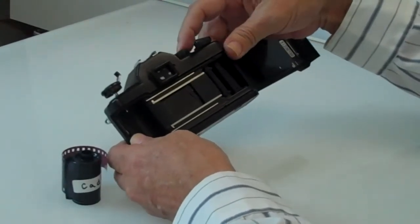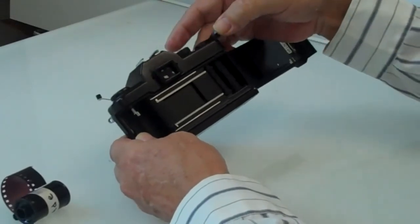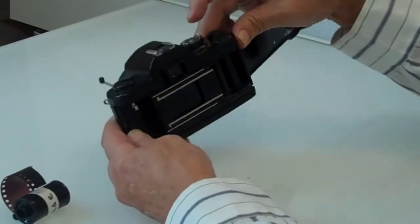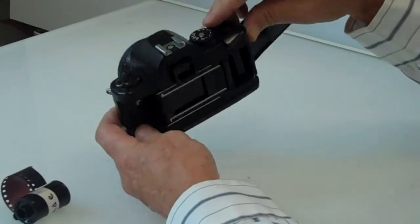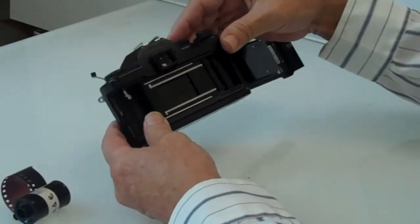This is the interior of the 35mm camera. You can see how the shutter operates as you release the shutter button, which is here, and that's what you're looking at.